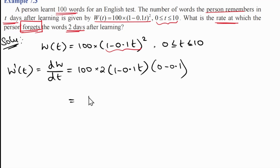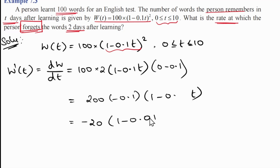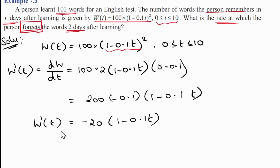Putting it all together: 100 × 2 × (1 - 0.1t) × (-0.1) gives us w'(t) = -20(1 - 0.1t). This is our expression for w'(t).